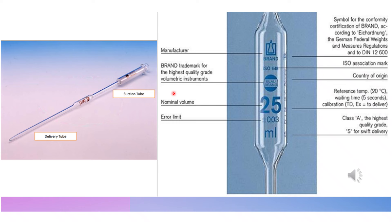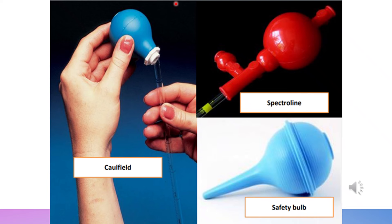A pipette has a suction tube — where we attach the safety bulb or rubber bulb to aid in suction — and a delivery tube, which is the opening you immerse into another container to transfer fluid. These are different examples of pipette bulbs, including the coal field bulb and the safety bulb, which aid in suction of fluid for the pipettes.